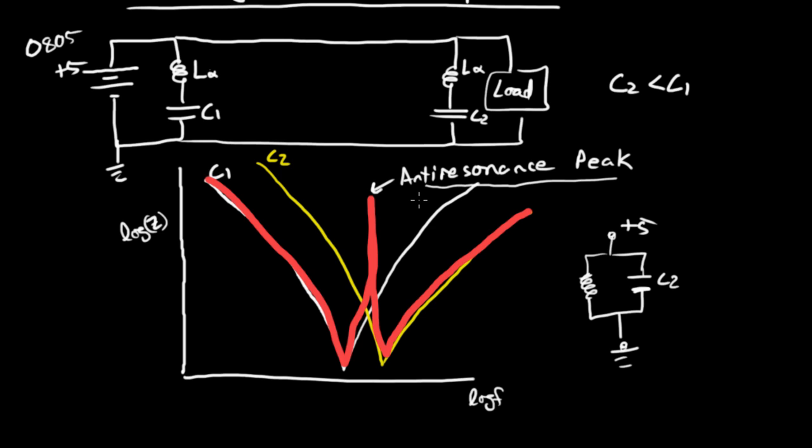But before I do that, let's consider the situation where we're adding in more capacitors to the system. Let's say that over here at C1, we were to include a second capacitor right there, so it has the value of C1 and L-alpha.